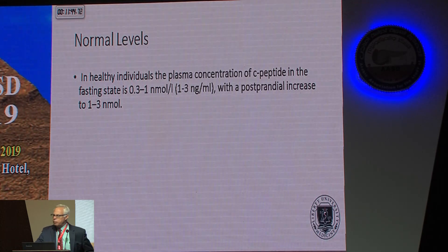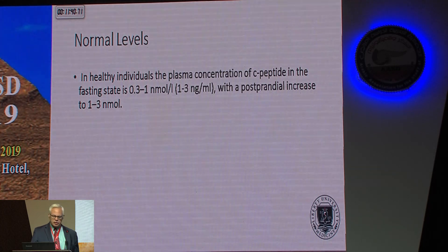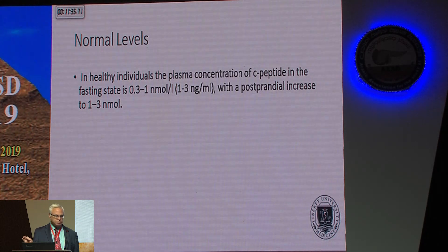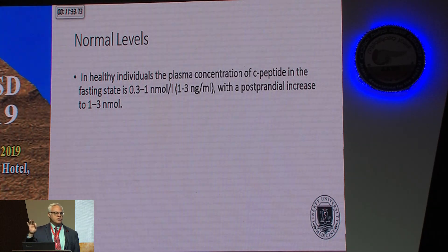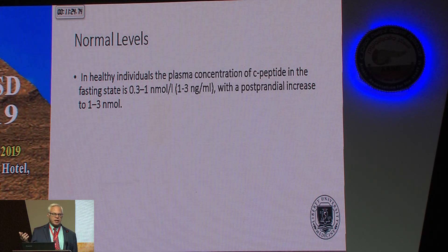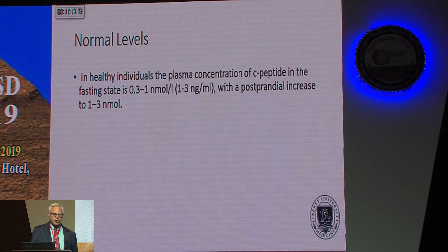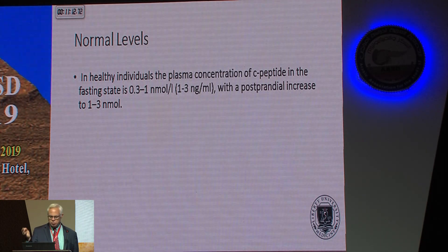What are normal levels? I'll give both SI units and the other units. The SI units are nanomoles per liter — that's about 0.3 to 1. To convert to nanograms per milliliter, you just multiply by 3. Normal levels are about 0.2 to 0.3 in non-fasting, non-diabetic individuals, and you get a little bit of post-prandial increase, maybe about three-fold. We'll talk about how we can use and exploit that.